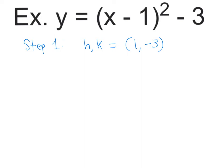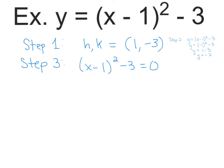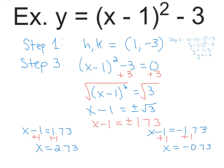Step 2: find the y-intercept. I'm going to plug in 0 for x and solve for y. I followed the equation all the way down and got y equals negative 2. So my y-intercept is at negative 2. Step 3: find the roots or x-intercepts — set it equal to 0 and solve. I add 3 to both sides and use the square root method, getting x minus 1 equals plus or minus the square root of 3, which is 1.73. Solving the two equations gives x equals 2.73 and x equals negative 0.73.